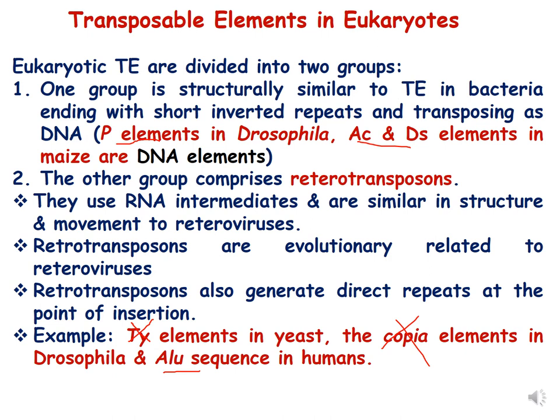Retrotransposons are evolutionarily related to retroviruses. Retrotransposons also generate direct repeats at the point of insertion. Examples of transposable elements in eukaryotes are TY elements in yeast, copia elements in Drosophila, and ALU sequences in humans.